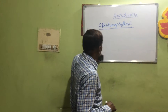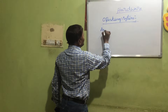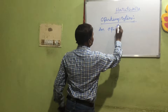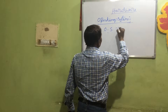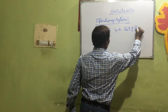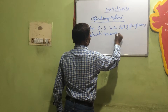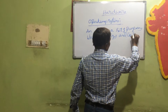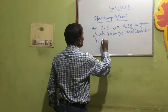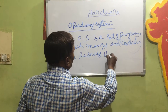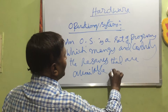So what exactly is an operating system? Listen carefully — this operating system is very, very important. An operating system, or OS, is a set of programs which manages and controls the resources that are available in the computer.